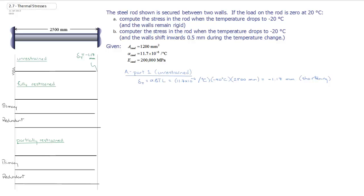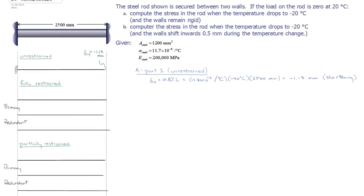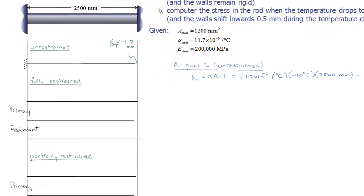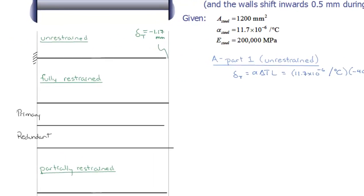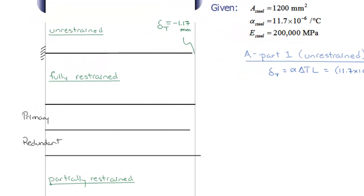So we're going to use a force method of analysis using superposition, a primary and a redundant structure, in order to understand the loads caused or the reaction forces caused in our fully restrained rod under a thermal change.